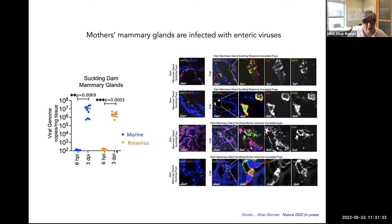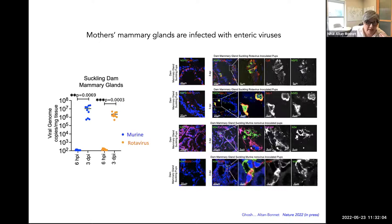But what was really surprising to us is when we collected the mother's mammary glands: we found very robust replication of murine noroviruses and rotaviruses in an animal whose pups had been orally infected with rotavirus. So the mammary glands were replicating these enteric viruses. Up to this point, everything published said these viruses replicate only in intestinal tissues — but now we were seeing them replicating in the mammary glands, specifically in the epithelial cells lining the milk ducts, and also in immune cells such as B cells and plasma cells that produce IgA.